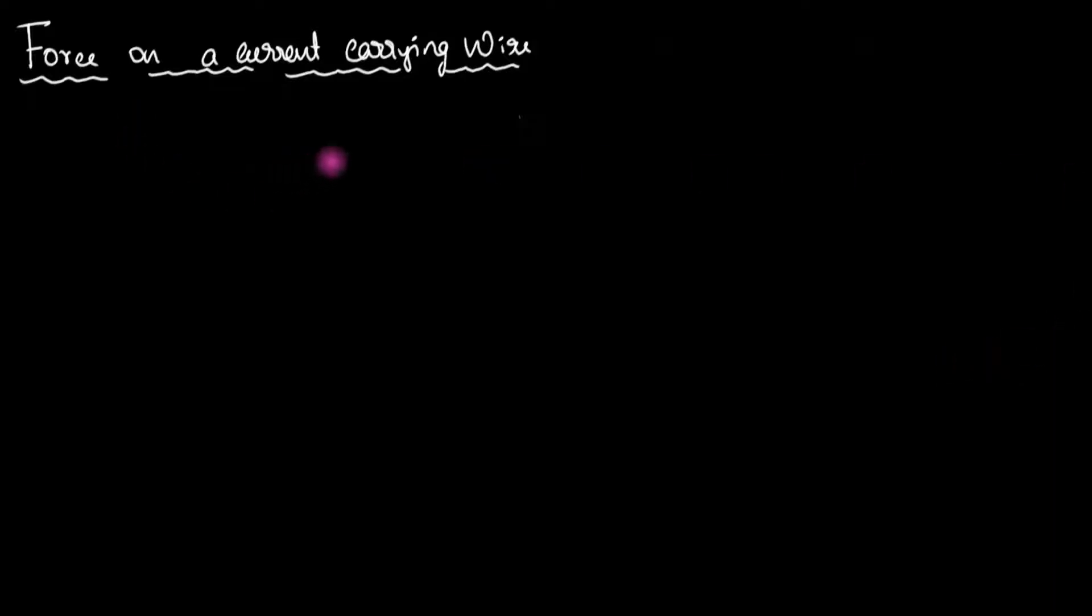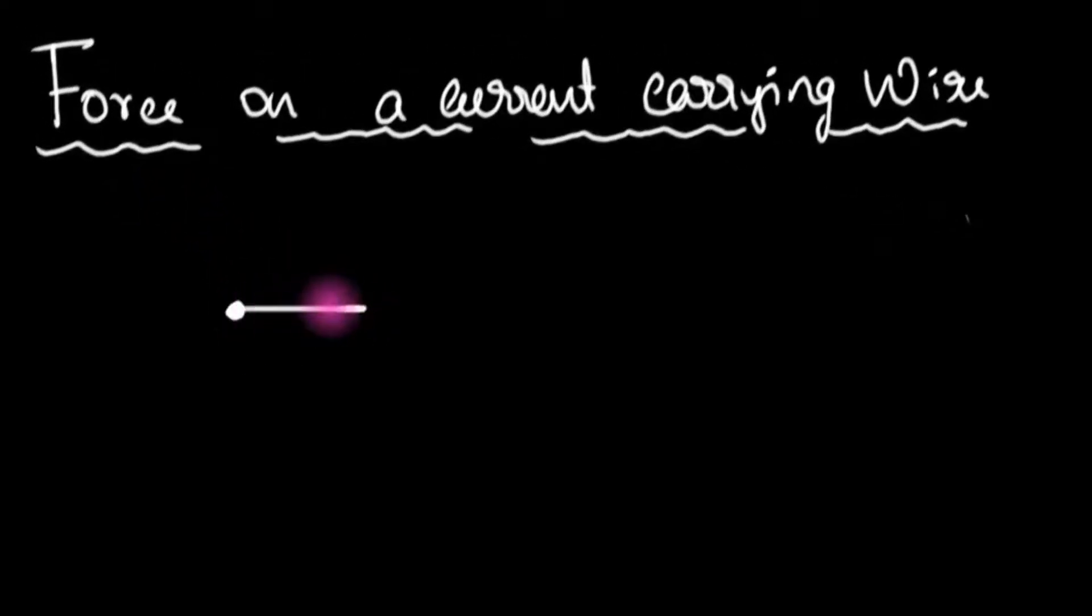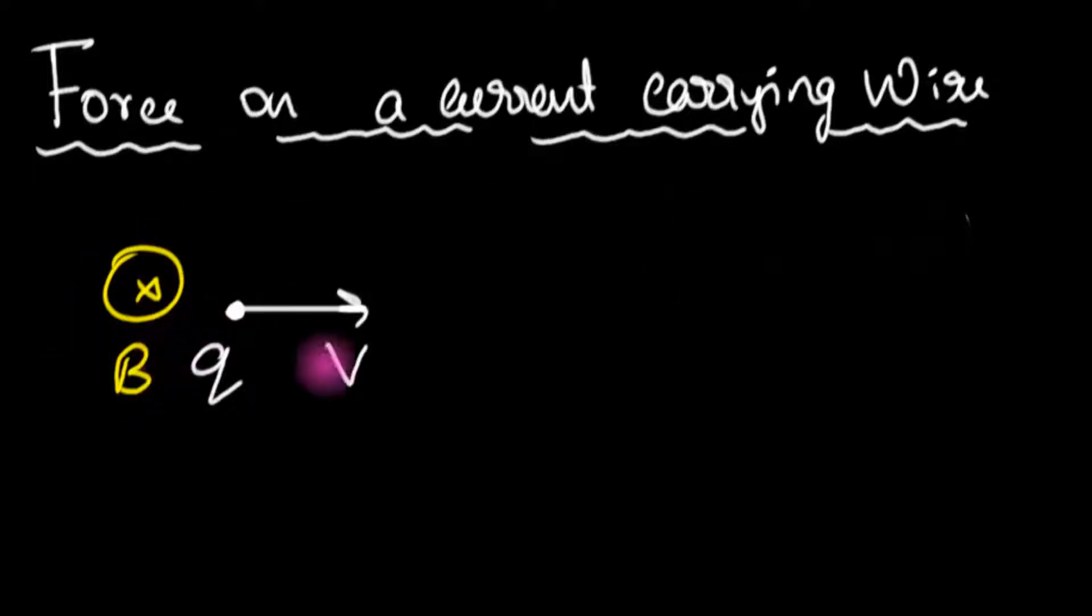In the previous episodes we have seen that charges inside a magnetic field experience a force if they are moving. We have a charge Q which is moving with a velocity V and suppose that there is a magnetic field somewhere inside the board.